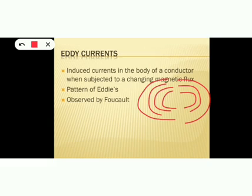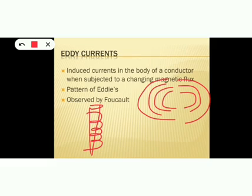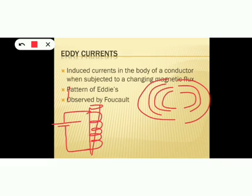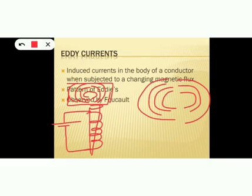Consider an electromagnet. An electromagnet is constructed by taking an iron nail, wrapping a wire in the form of a helix over the nail, and connecting the ends of the wire to a cell. When the circuit is switched on, it forms an electromagnet. If a metallic sheet is placed on top of this electromagnet, circulating currents are formed in a pattern — this current is known as eddy current.